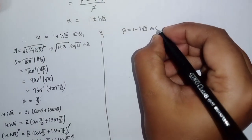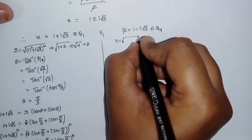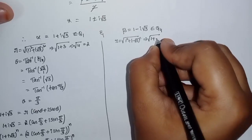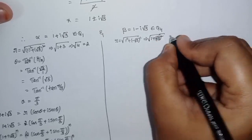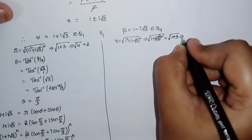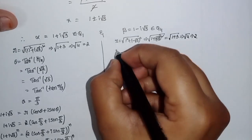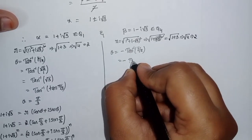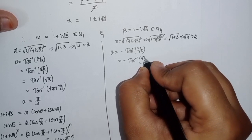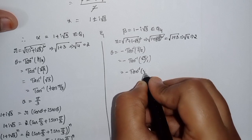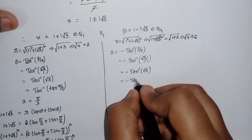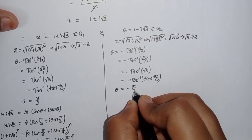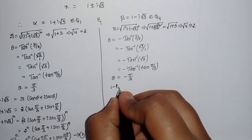Similarly for beta = 1 - i√3: r = √(1² + (-√3)²) = √(1 + 3) = 2. Beta is in the fourth quadrant, so theta = -tan⁻¹(y/x) = -tan⁻¹(√3/1) = -tan⁻¹(√3) = -tan(π/3), therefore theta = -π/3.